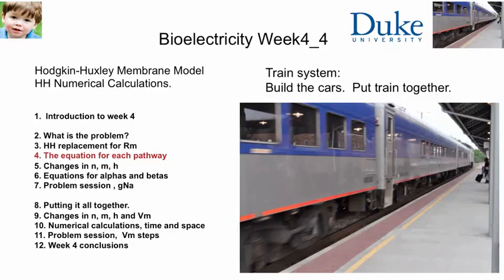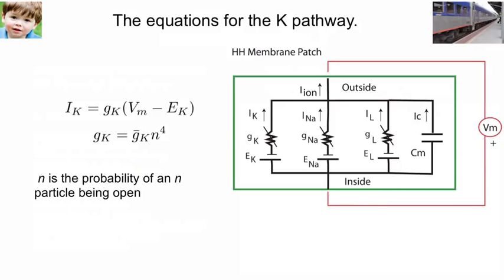So far, we've noticed that Hodgkin and Huxley replaced the composite membrane resistance, Rm, with separate pathways for each of the different ions. In this lecture, we consider what is the mathematical equation for each of these three pathways.